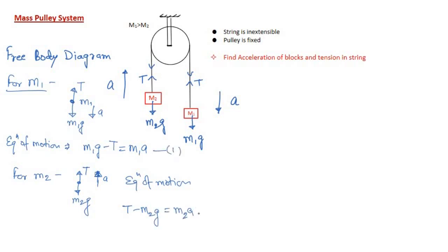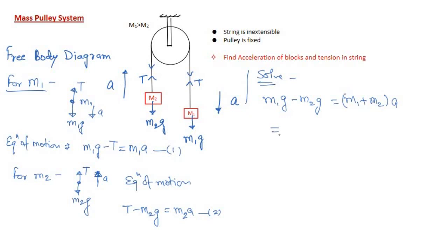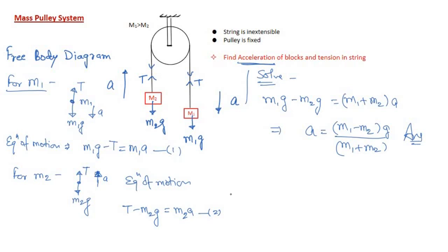Let us call these equation 1 and equation 2. We have two equations and two unknowns: T and a. Adding equation 1 and equation 2 gives: m1·g − m2·g = (m1 + m2)·a. Therefore, the acceleration is: a = (m1 − m2)·g / (m1 + m2). Now substitute the value of a into one of the equations to find T.